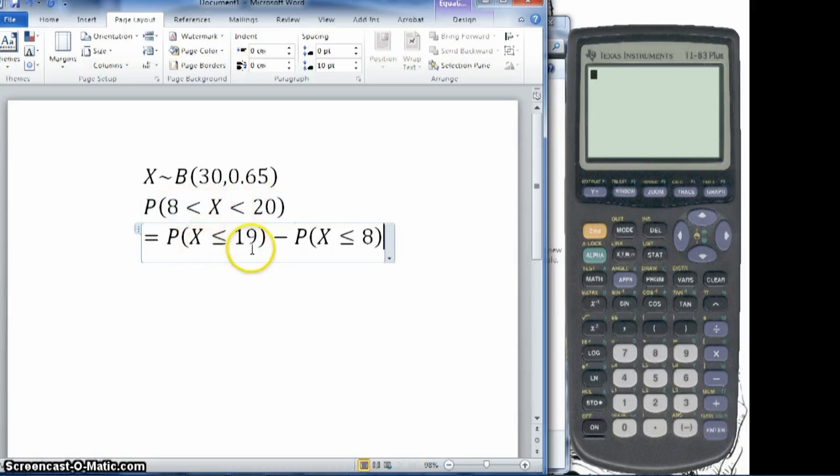So 9 and 19. If I find the probability of X being less than or equal to 19, and then take away the first 8, from 0 up to 8, then I'm left with 9 to 19. So I'm going to need to work out each of these probabilities in turn. You can do it in one go on the calculator. But I'm going to do it in turn, just to show a little bit more working.